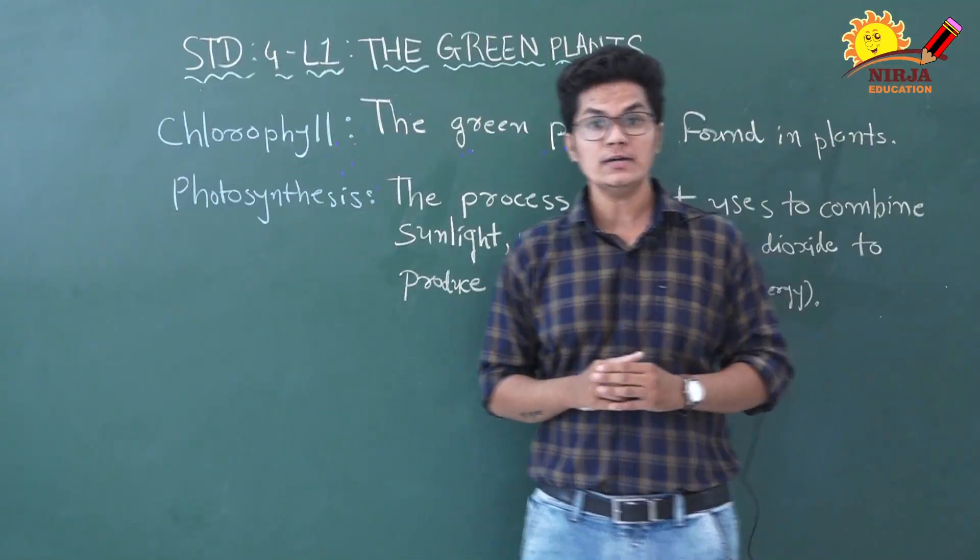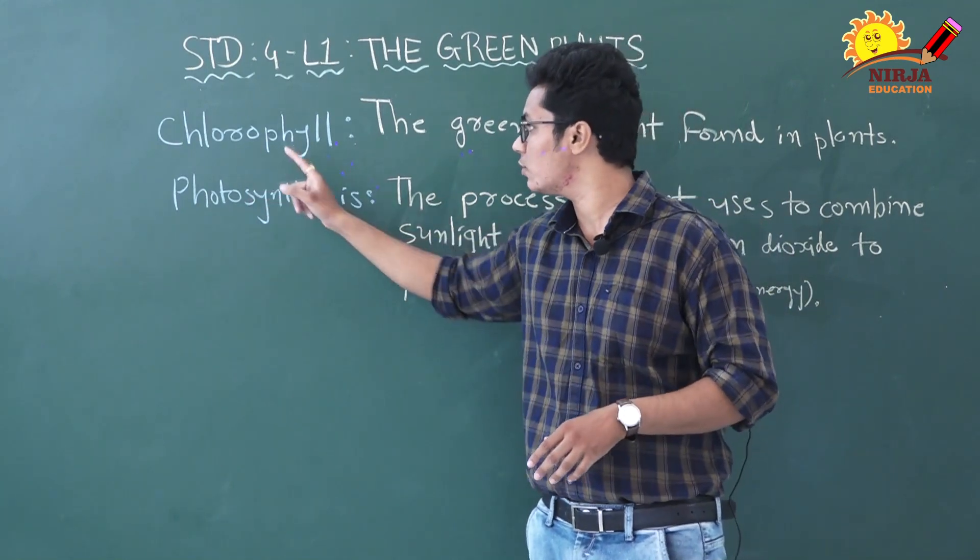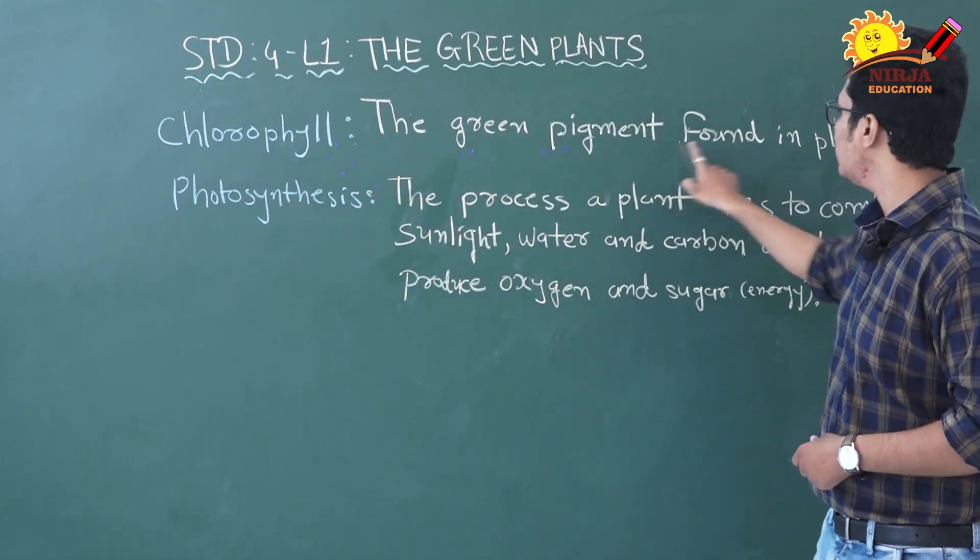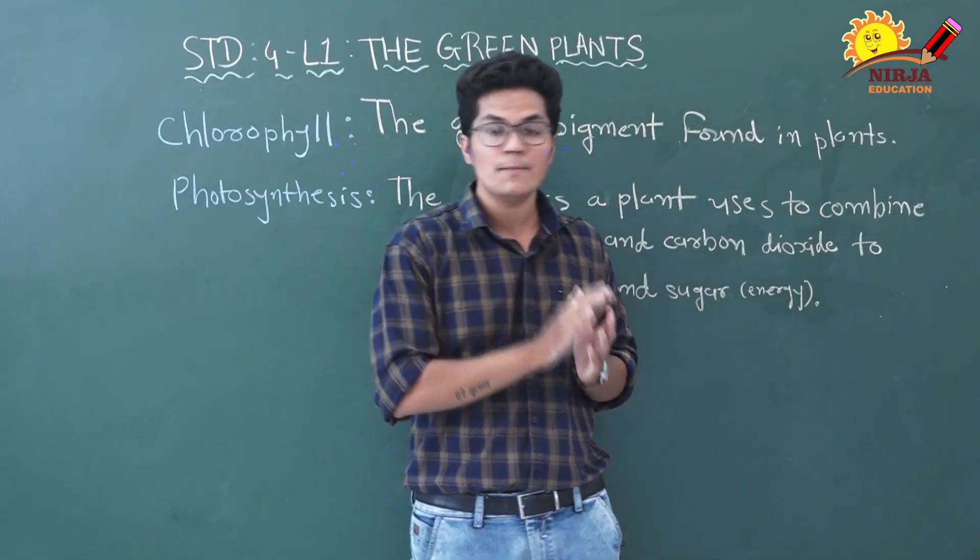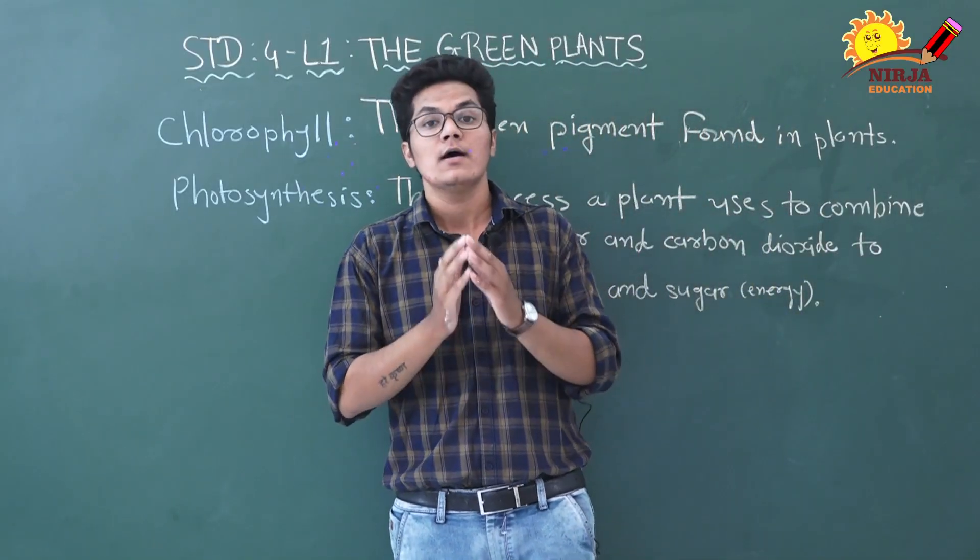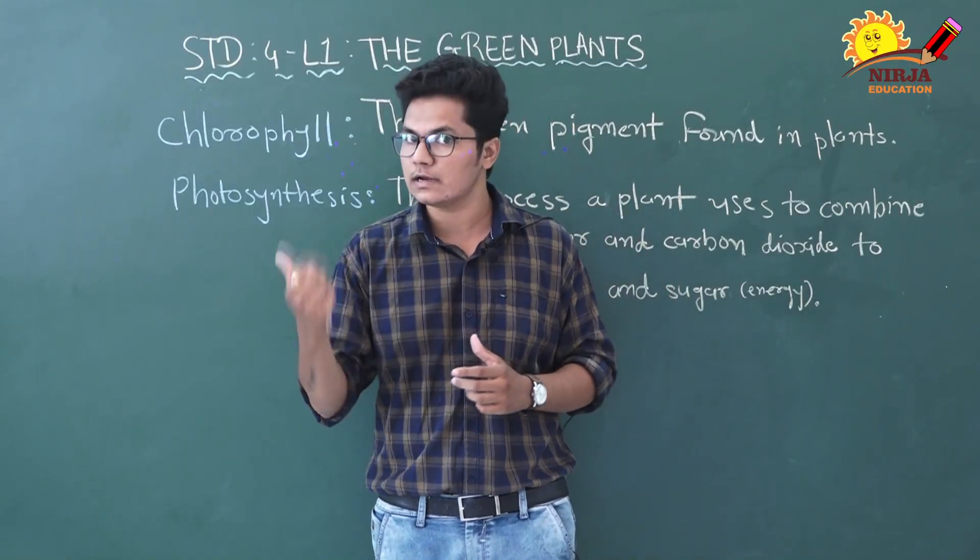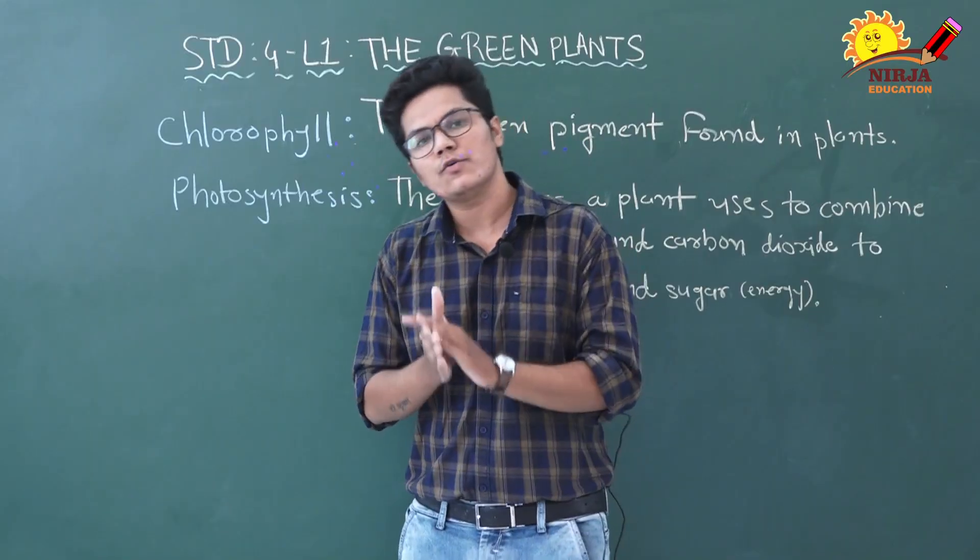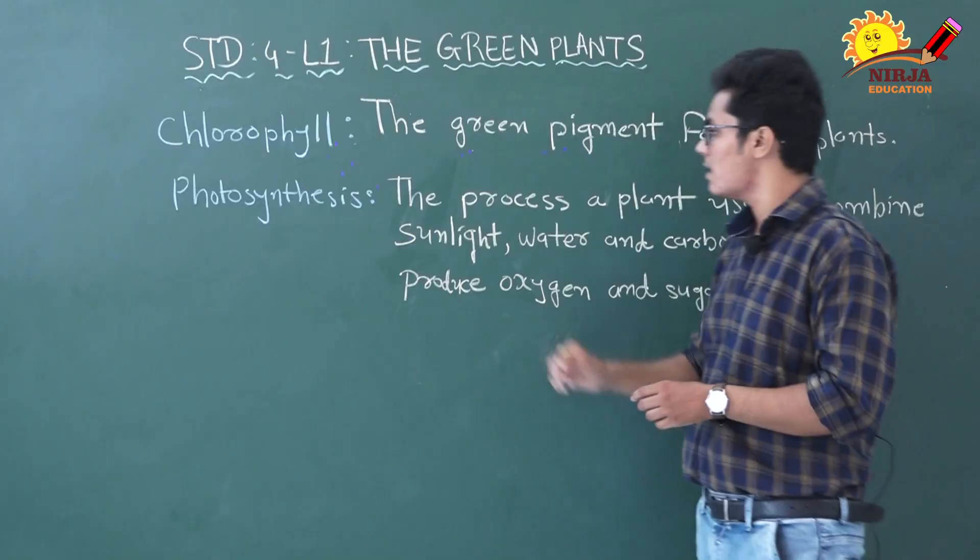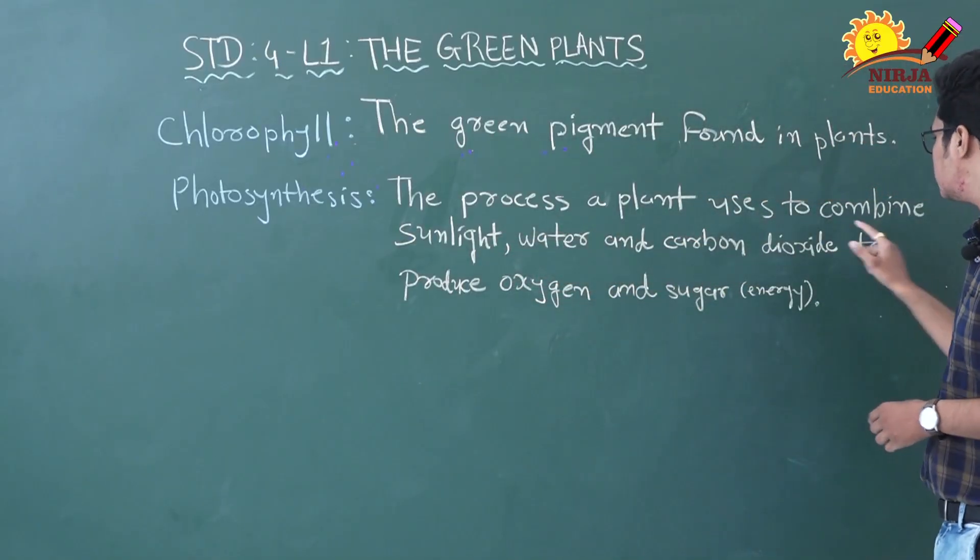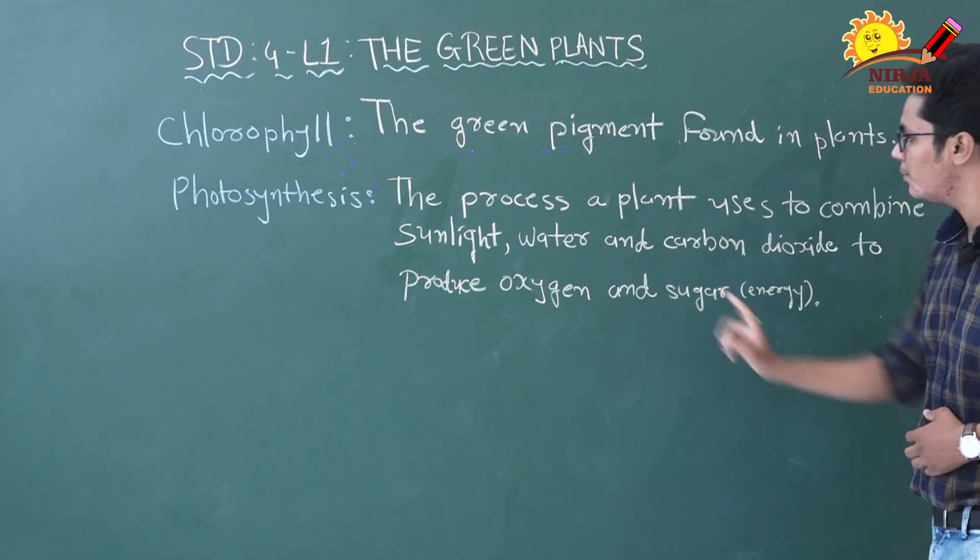Now let's revise two most important words of this lesson. First is chlorophyll. The green pigment found in plants. Chlorophyll is a green pigment found in plants. Because of chlorophyll, the plants are green in color, leaves are green in color. And because of chlorophyll, plants can make food.